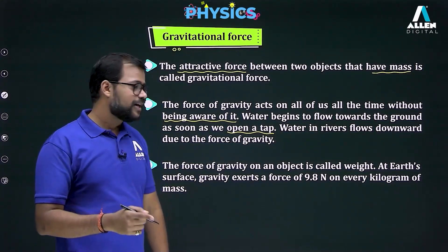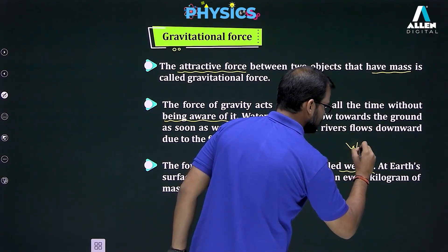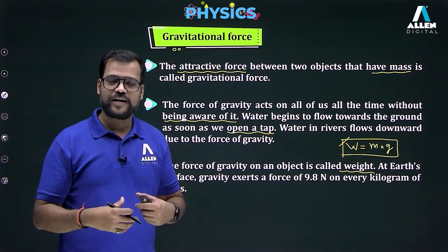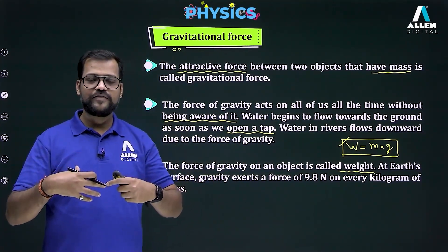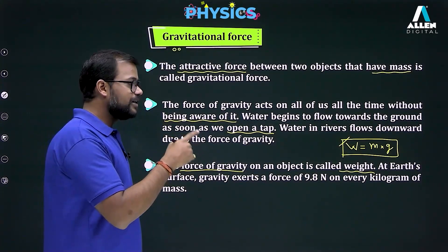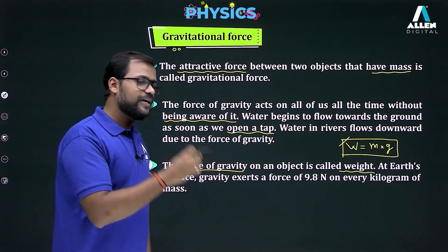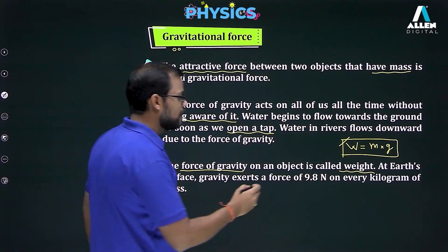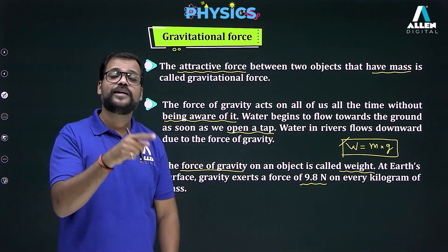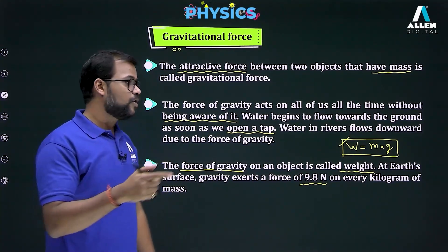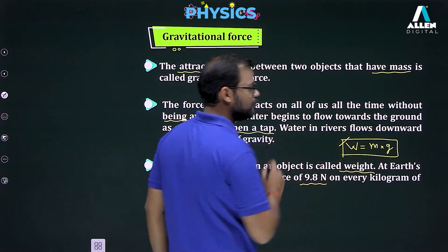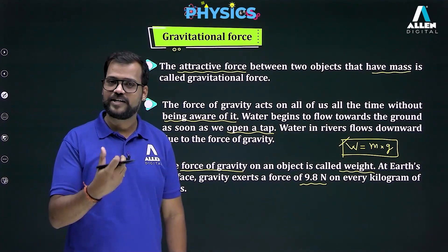The force of gravity on an object is called its body weight. Weight equals mass times gravity (W = mg). All objects have some mass, and when under the influence of gravity it becomes body weight. The unit for weight is newton. At the earth's surface, gravity exerts a force of 9.8 newtons on every kilogram of mass, so for a 1 kg mass, a force of 9.8 N acts on it.